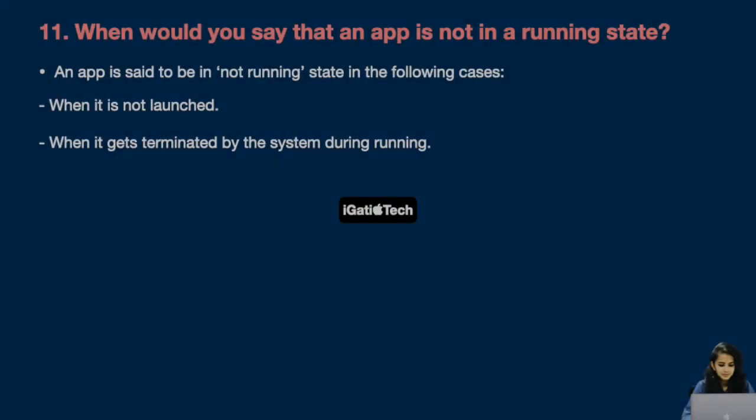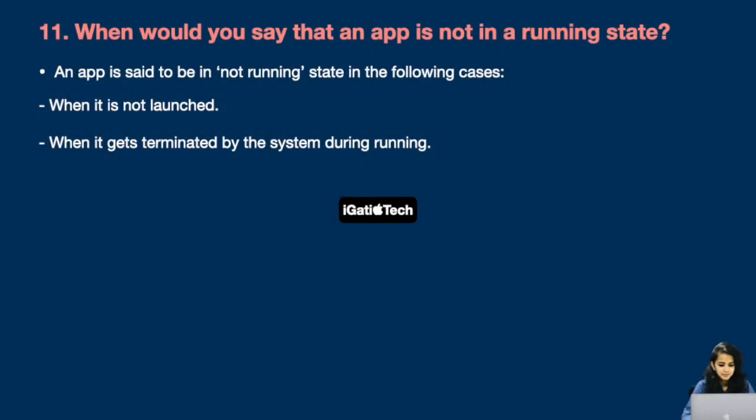Next question: when would you say that an app is not in a running state? An app is said to be in the not running state in the following cases: first, when it has not been launched, and second, when it gets terminated by the system during running.